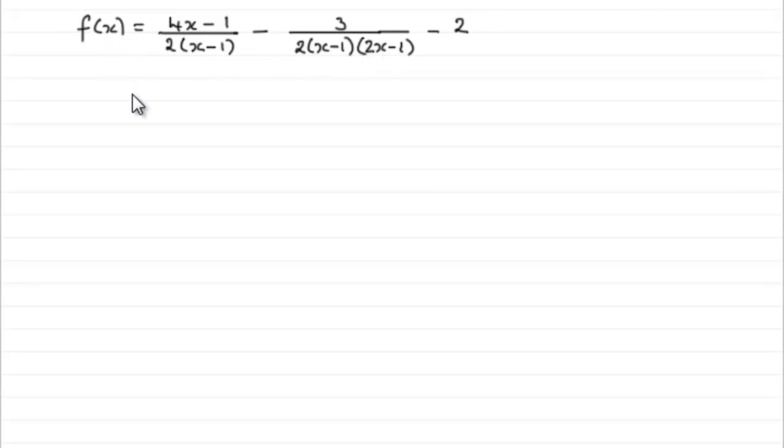So, we can say that f of x equals, and these two terms simplified to 4x plus 1 all over 2x minus 1.